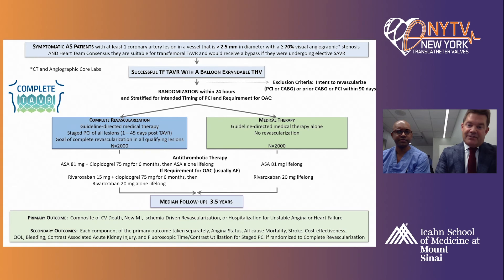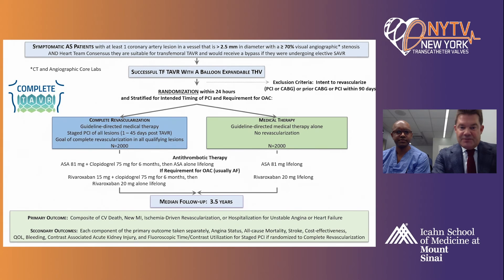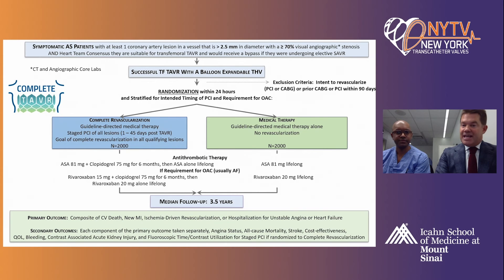Two thousand patients in complete revascularization and 2,000 in medical therapy. Antithrombotic therapy, after much steering committee discussion: aspirin and clopidogrel for six months, then aspirin lifelong if you have PCI, versus aspirin monotherapy for TAVI alone. If you require an OAC — and given our expected mean age in the mid-70s, that's anticipated — it will be rivaroxaban plus clopidogrel for six months, then rivaroxaban 20 mg lifelong. This is a five-year trial and that may change as data emerges.